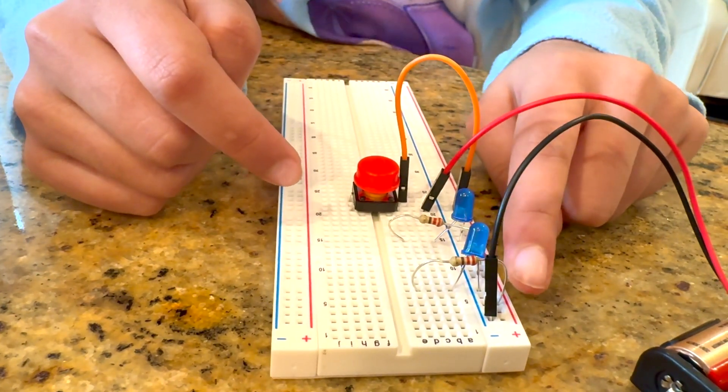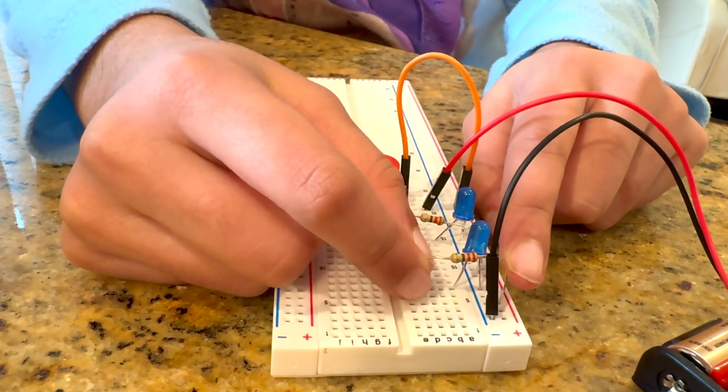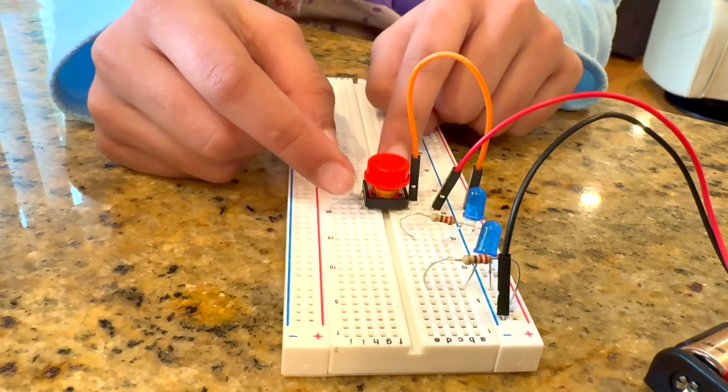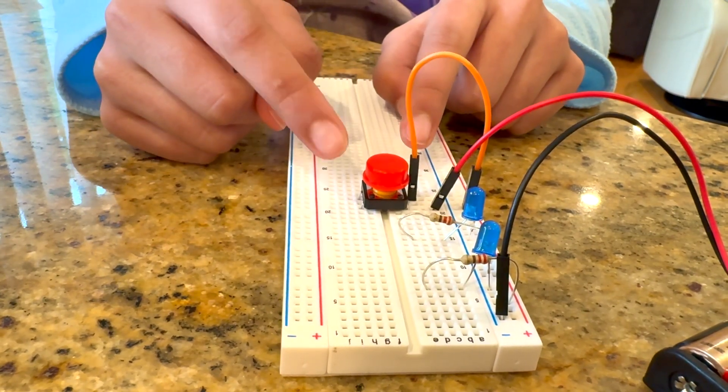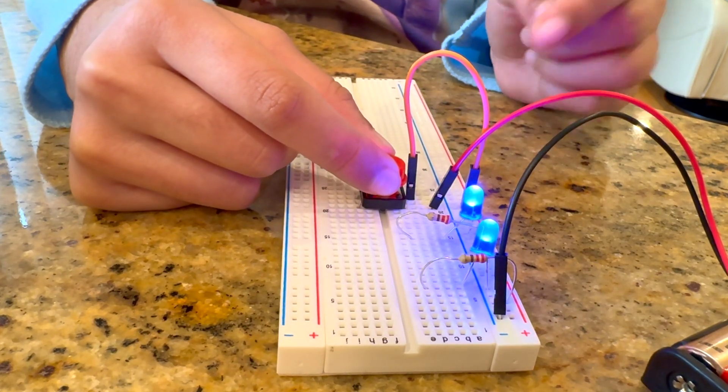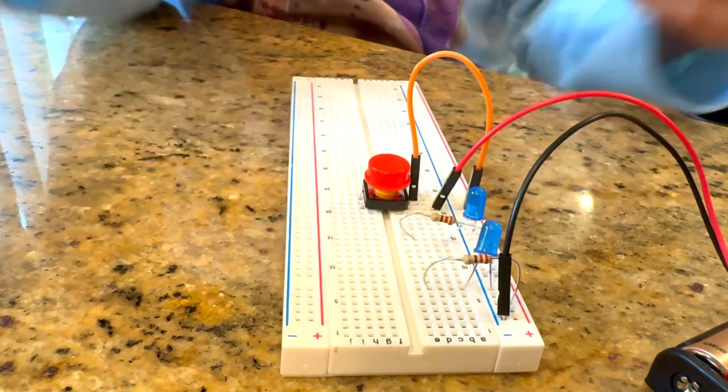Now, the energy can either choose to go in this terminal or this terminal, as I discussed earlier. And when this push-button is not being pressed, it's stopping the current from flowing. And when it is pressed, it's closing the circuit, therefore allowing the current to flow.